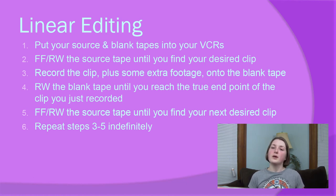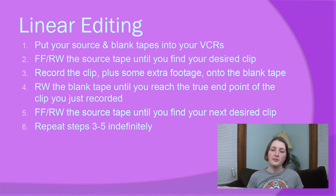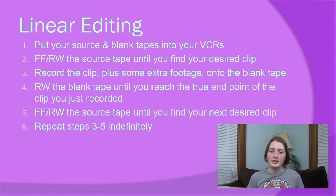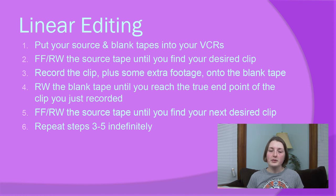Put your source VHS tape into one VCR and your blank VHS tape into the other. Fast forward or rewind your source tape to the part you want in your AMV, then play that footage on your monitor with one VCR while recording it onto your blank tape with the other. Record a few extra seconds at the end for good measure to avoid any black spots. Now carefully rewind your blank tape to just the part where you want your next clip to start — this is hard because a lot of VCRs only have one rewind speed and that speed is fast. Then pop in your next VHS tape, find the next bit of footage you want to use, and keep doing this forever.